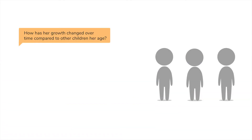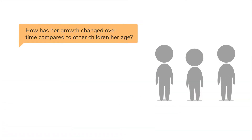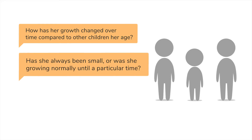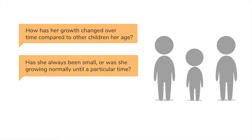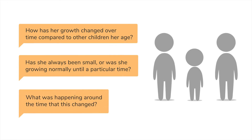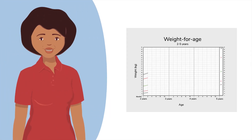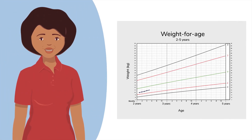You can ask: how has her growth changed over time compared to other children her age? Has she always been small, or was she growing normally until a particular time? What was happening around the time that this changed? Healthy children should always be growing in height or length and gaining weight. If their growth curve starts flattening out or they fall off their curve, this indicates a problem.